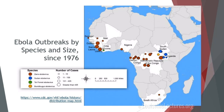Since 1976, there have been outbreaks over the last 40-some-odd years. This graph from the CDC shows the areas where outbreaks took place. The colors correlate with the species of the Ebola virus, and the circumference of those circles corresponds to the number of cases that occurred.